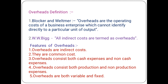The second definition is according to WWBIC: all indirect costs are termed as overheads. That means overheads equals indirect costs, or you can say overheads is all indirect costs. Indirect costs are the aggregate of indirect material costs, indirect labor costs, and indirect expenses.